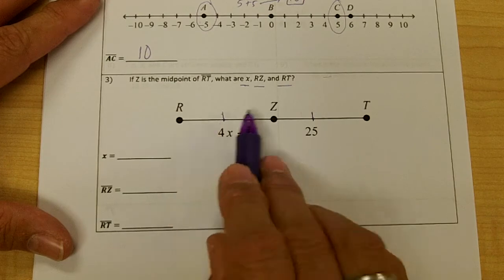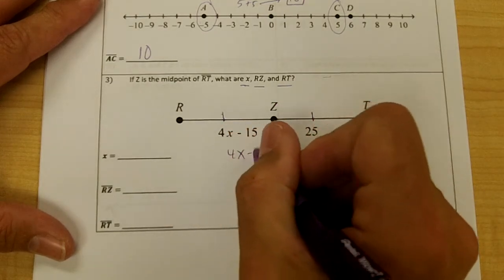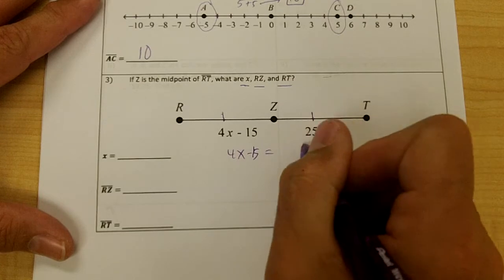Since this is cut in half, that means these two segments are equal. So we're going to do 4x minus 15 equals 25.